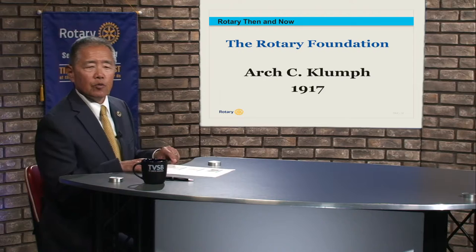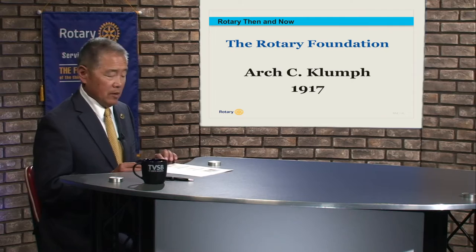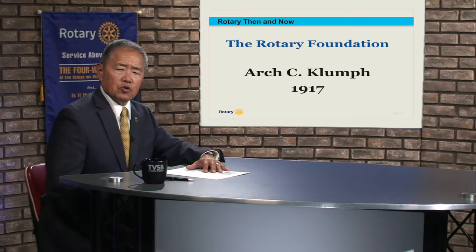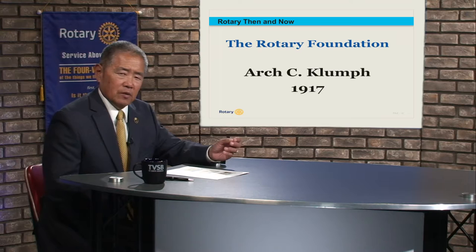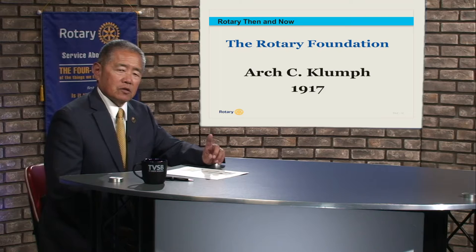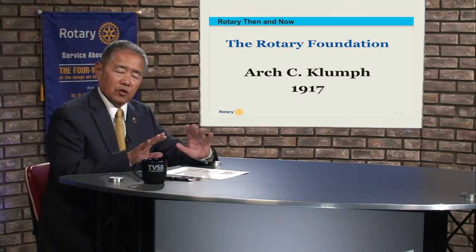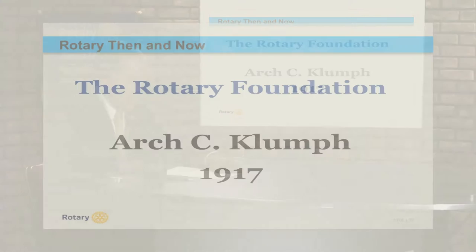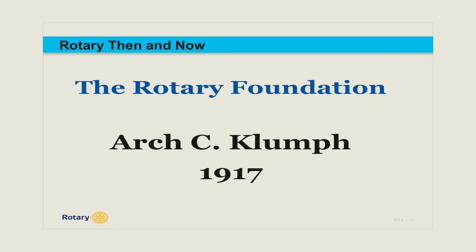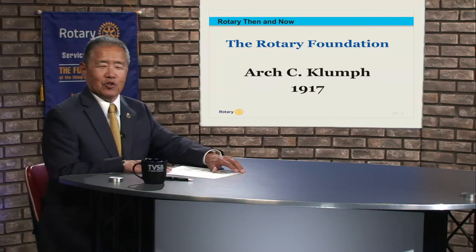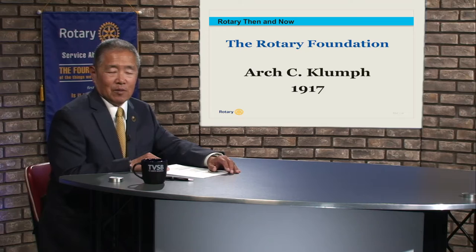Now we move into the Rotary Foundation. Most Rotarians haven't really thought about this: Rotary International is the administrative end of Rotary — the business end. All administrative work and dues go there. But the projects and programs we put in place are not funded through Rotary International; they are actually funded through the Rotary Foundation. It's important to understand these are two separate entities working together. The foundation was started by Arch C. Klump, who was Rotary president at the time. In 1917, he started the foundation with $26.50 — the amount left over from the Kansas City Convention — which was converted to create the Rotary Foundation endowment.